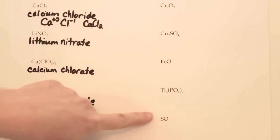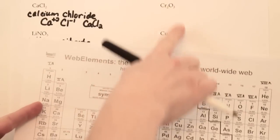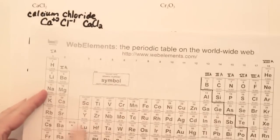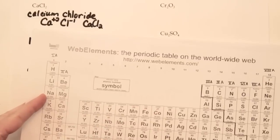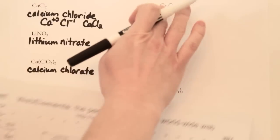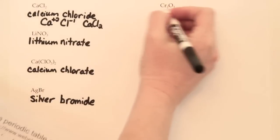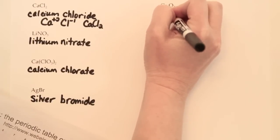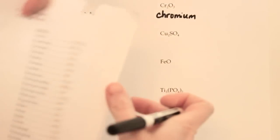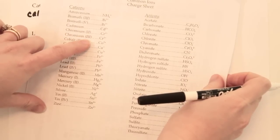The examples on the right all contain transition metals — chromium, copper, iron, titanium — all from the middle portion of the periodic table. They require a little more work because we have to tell someone what type of chromium or copper we have. For Cr, the name is chromium, but we have to decide: is it chromium with a plus 2 charge or chromium with a plus 3 charge?